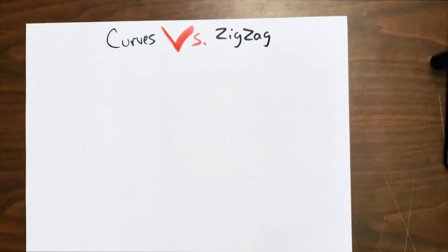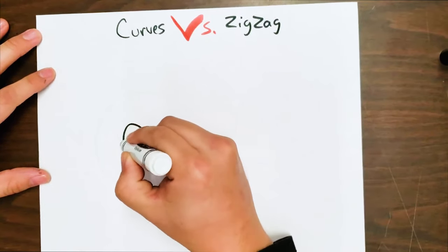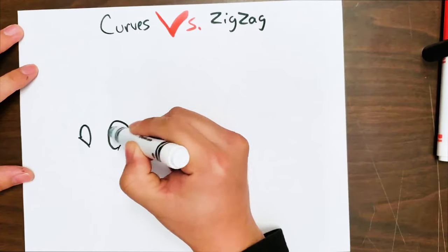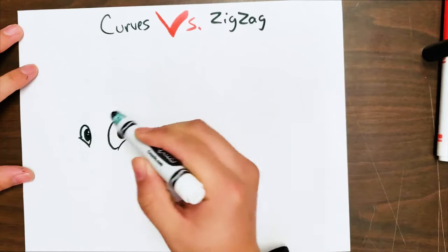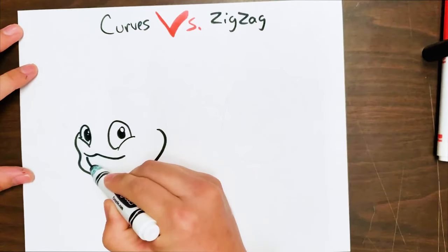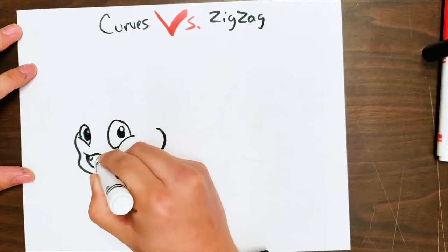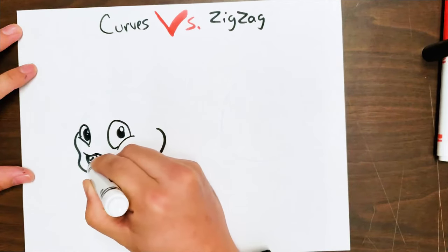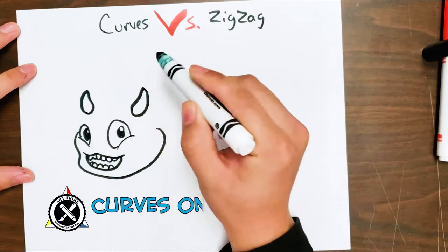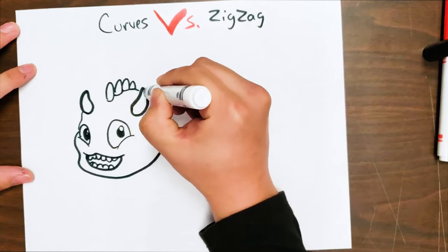Now let's take a look at curves versus zigzags. I'm going to draw two little monsters. And for this first one, I'm going to use curved lines. He has a little curvy face, a little cheeky face, some round horns, some round spikes, and some round teeth. It's almost a cute little monster.